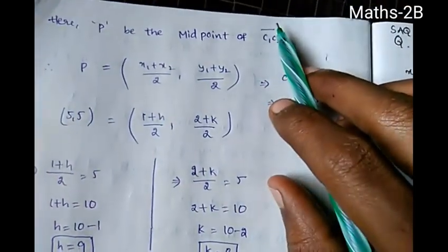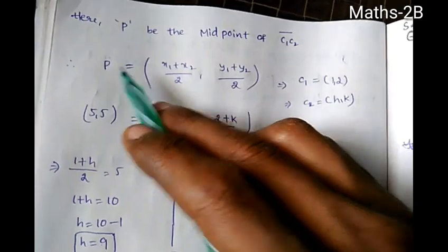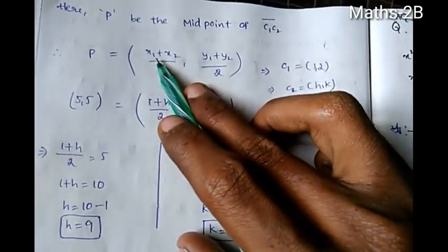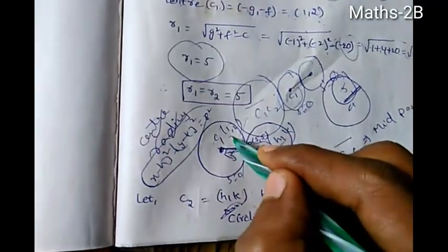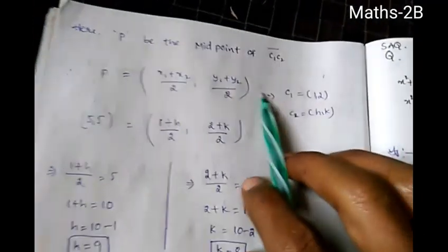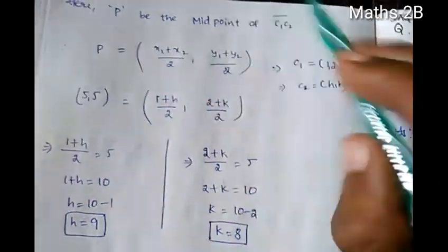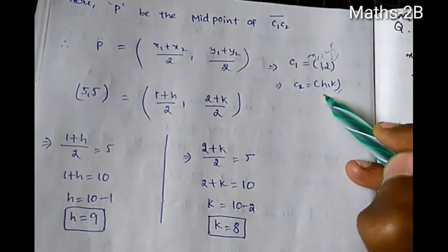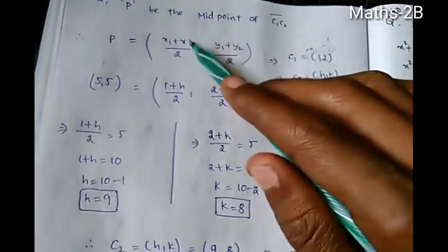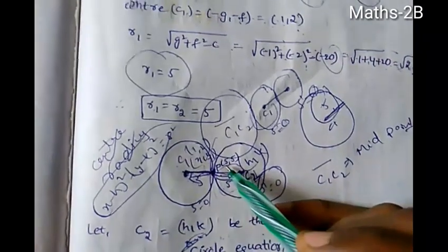P is the midpoint of C1C2 line segment. Using the midpoint formula: P = ((x1 + x2)/2, (y1 + y2)/2). Here x1, y1 is the first circle center, and x2, y2 equals h, k. So C1 = (1, 2) and C2 = (h, k). P equals (5, 5).